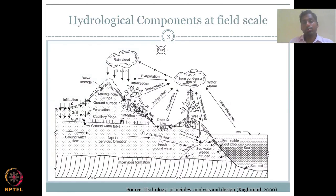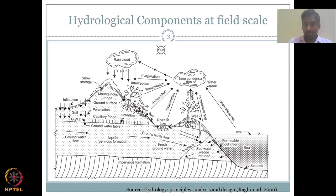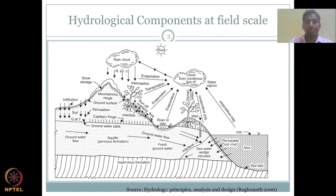At field scale, how did we look at the hydrological components? In the precipitation part, we looked at how rainfall occurs. We have multiple methods for rainfall, and one of them is frontal, which is very important for understanding the small rainfall events that occur in India.